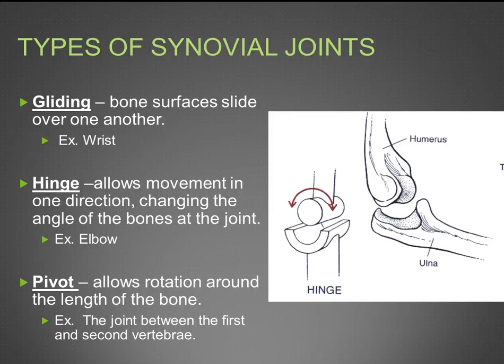Next is the hinge joint, which allows movement in one direction, changing the angle of the bones at the joint — just like the hinge of a door, you can only move in one direction, like your elbow.